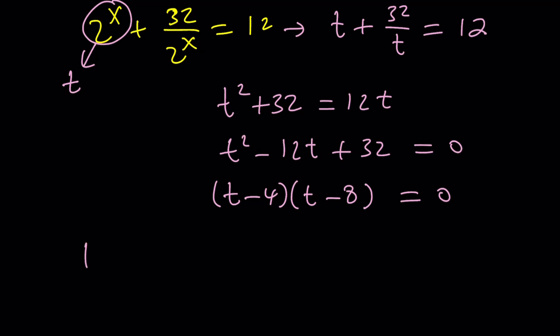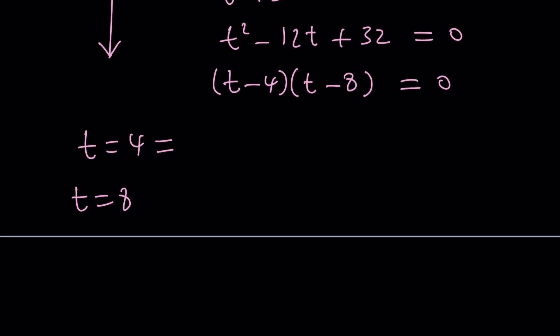From here, we get two things. t is equal to 4 or t is equal to 8. But what is t? t is 2 to the power x, remember? So we're going to replace t with 2 to the power x. And that's going to give us x equals 2 or x equals 3, because 2 to the power 3 is equal to 8 and 2 to the power 2 is equal to 4. So we got two solutions from here, and they should both be good. Let's go ahead and take a look at the second method.